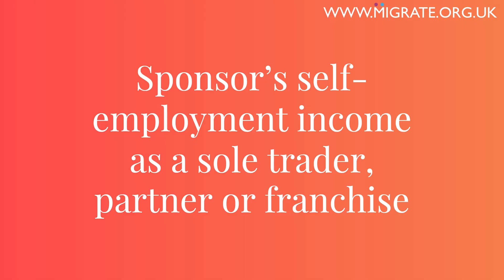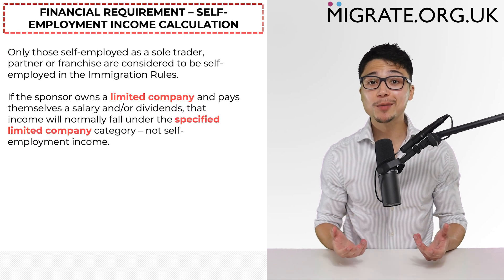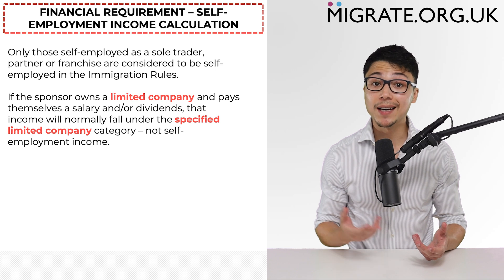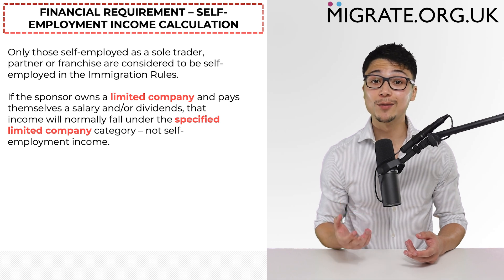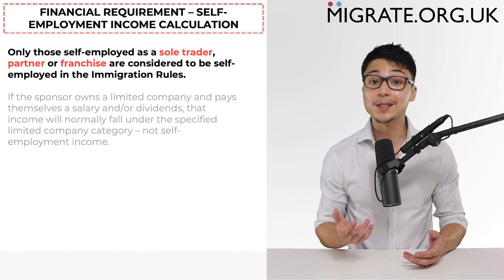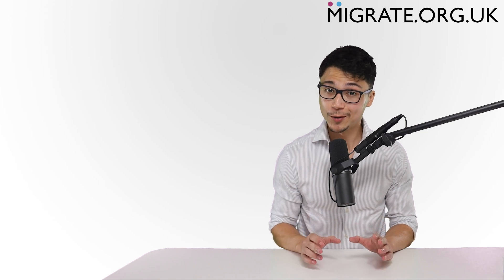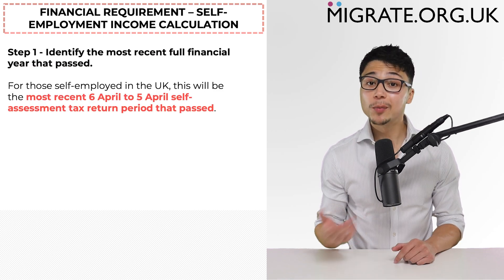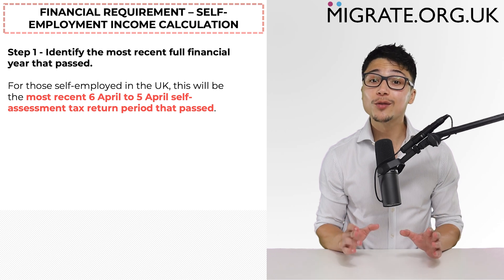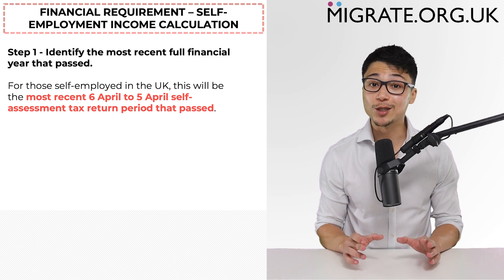We will now discuss the sponsor's self-employment income as a sole trader, partner, or franchise. Only those self-employed as a sole trader, partner, or franchise are considered to be self-employed in the immigration rules. If the sponsor owns a limited company and pays themselves a salary and/or dividends, that income will normally fall under the specified limited company category. To calculate the amount of income includable towards the financial requirement, step 1: identify the most recent financial year that passed. For sponsors self-employed in the UK, the most recent full financial year that passed will be the most recent 6th-to-5th-of-April self-assessment tax return period.